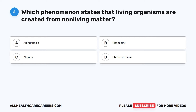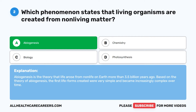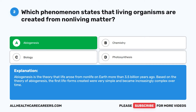The correct answer is A. Abiogenesis. Abiogenesis is the theory that life arose from non-life on Earth more than 3.5 billion years ago. Based on the theory of abiogenesis, the first life forms created were very simple and became increasingly complex over time.